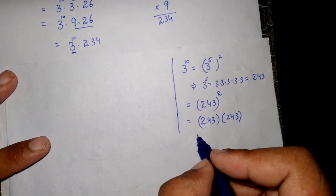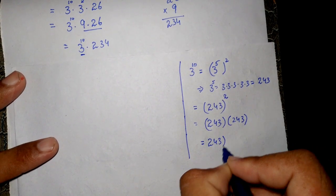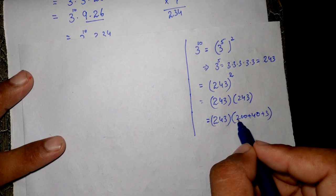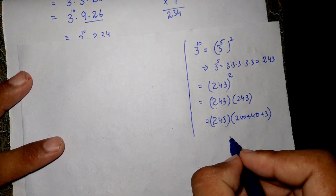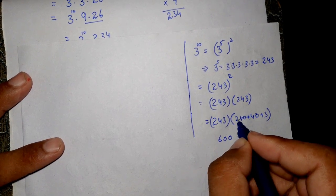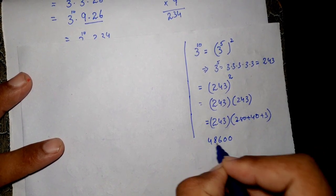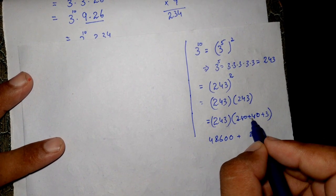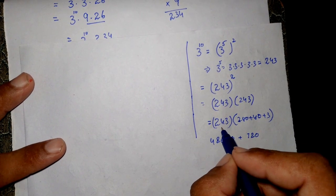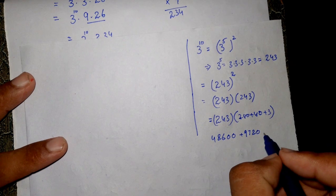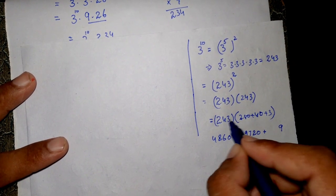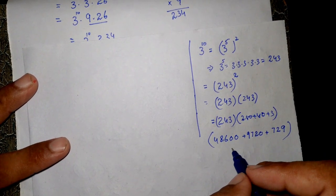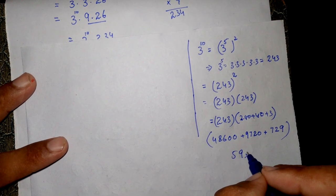So this will become 243 to the whole power of 2. Now we have to multiply 243 times 243. So 243 times 200 plus 40 plus 3. For 200: 2 times 3 is 6, 2 times 4 is 8, 2 times 2 is 4. For 40: 4 times 3 is 12, carry 1; 4 times 4 is 16 plus 1 is 17, carry 1; 4 times 2 is 8. Now we add these numbers, and this will be equal to 59,049.